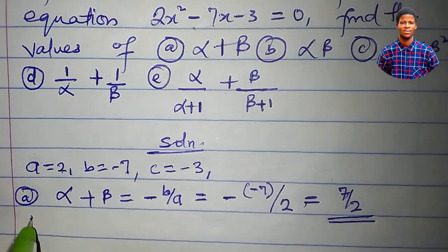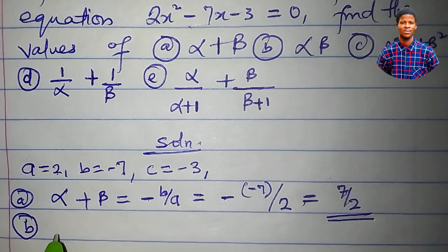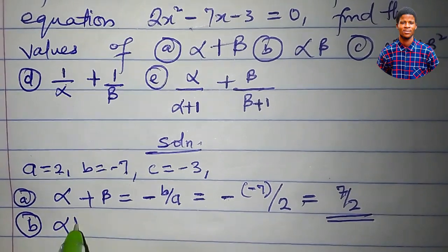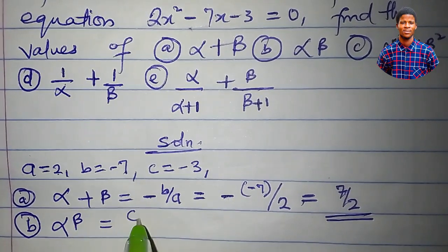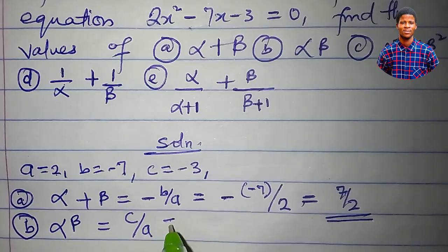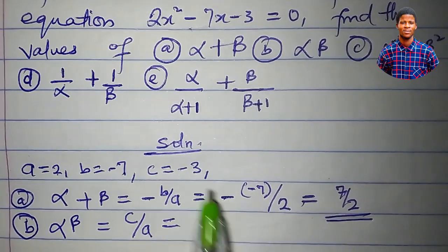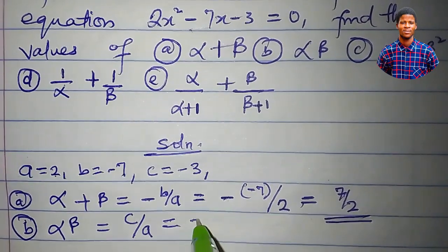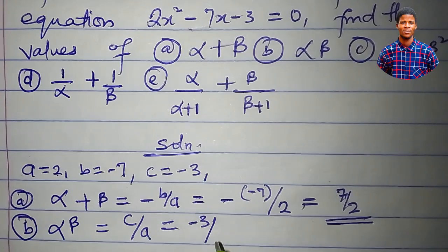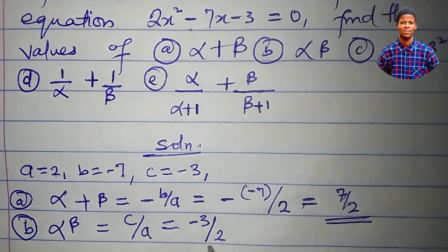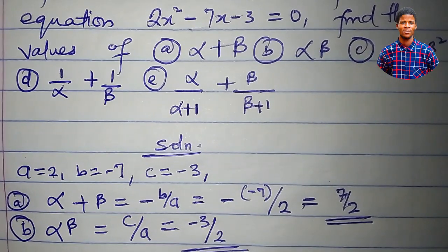If alpha and beta are the roots of this equation, then alpha times beta is simply c all over a. c is minus 3 and a is 2, so alpha beta equals minus 3 over 2.